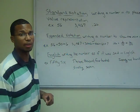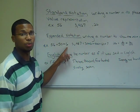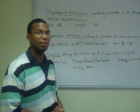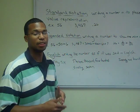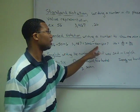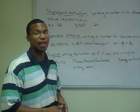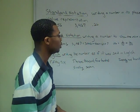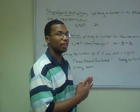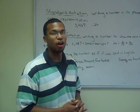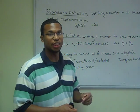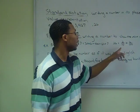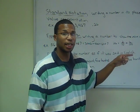So the number 56 is comprised of 5 tens and 6 ones. 3,467 is comprised of 3 thousands, so that would be 3 times 10 times 10 times 10, plus 4 hundreds, which is 4 times 10 times 10, plus 60, plus 7. For 26 hundredths, remember on the right side of the decimal that involves multiplying by increments of 1 over 10. So 26 hundredths would be 2 times 1 tenth, plus 6 times 1 tenth times 1 tenth.